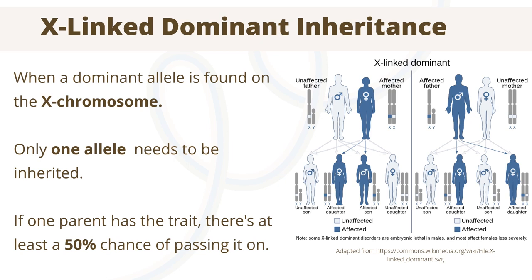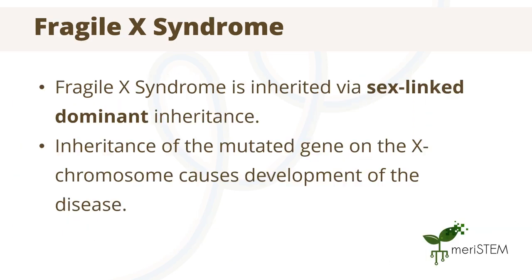The development of sex-linked dominant conditions is caused by the inheritance of one allele on the X chromosome. As these alleles are passed on through the germ cells, there is a difference in inheritance patterns between the mother and father. Males have a single X chromosome inherited from their mothers, while females carry two X chromosomes, one from each parent. If one parent has a trait, there is at least a 50% chance that this will be passed on to the offspring, though this can vary depending on which parent has the condition and the sex of the offspring. An example of a sex-linked dominant condition is fragile X syndrome, which occurs due to a mutation within the FMR1 gene found on the X chromosome.